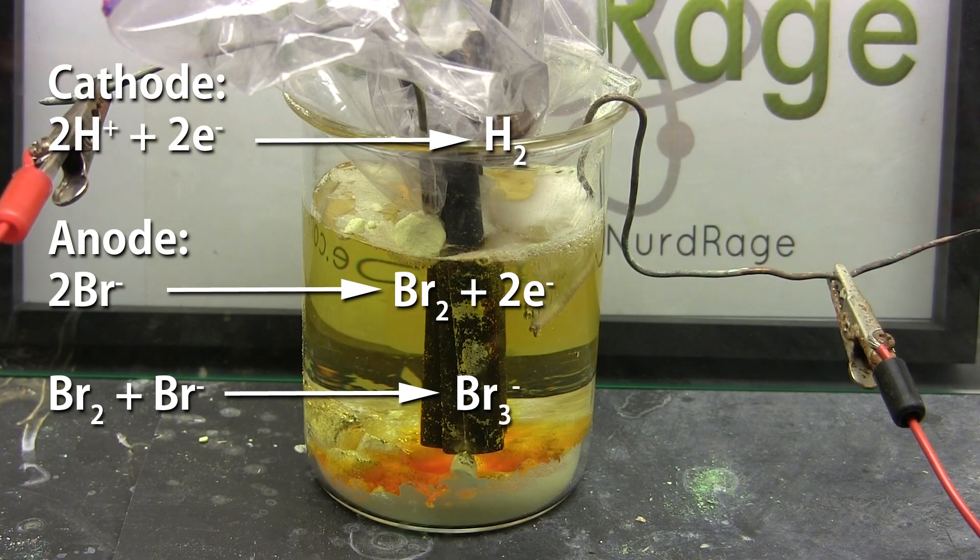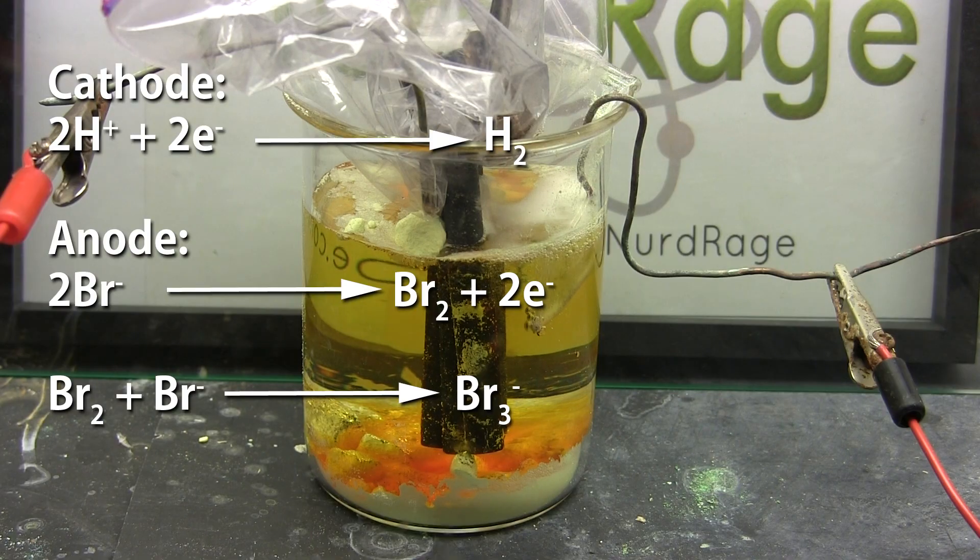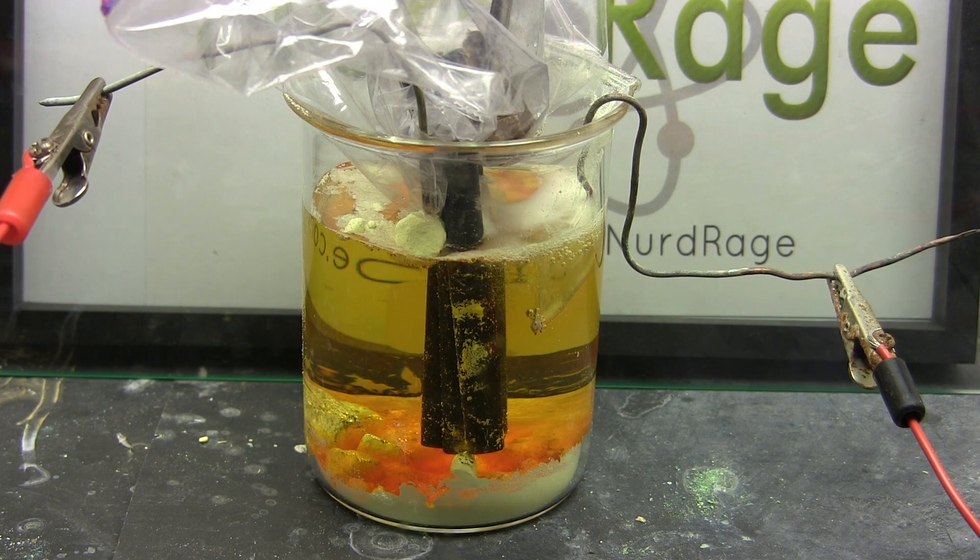Early on in the electrolysis this doesn't do much as the bromine quickly reacts with additional bromide to form tribromide ions which don't react with sulfur. You can see it here as this orange solution that sinks.